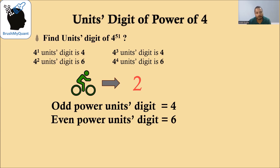In this case, we have the power as 51, which is an odd number. That means the units digit in this case will be equal to 4 itself.